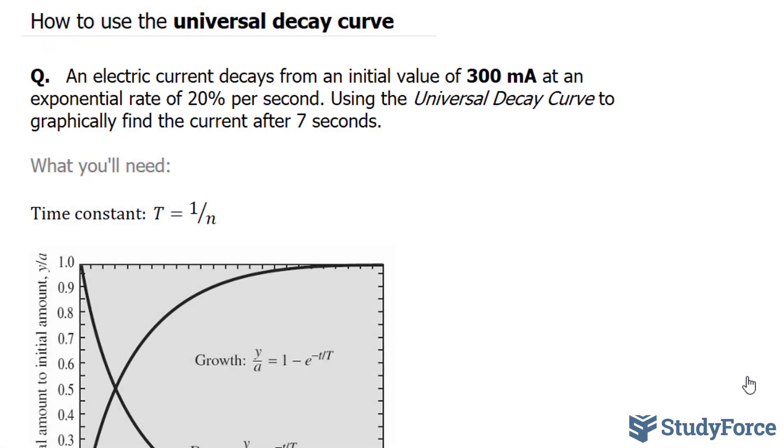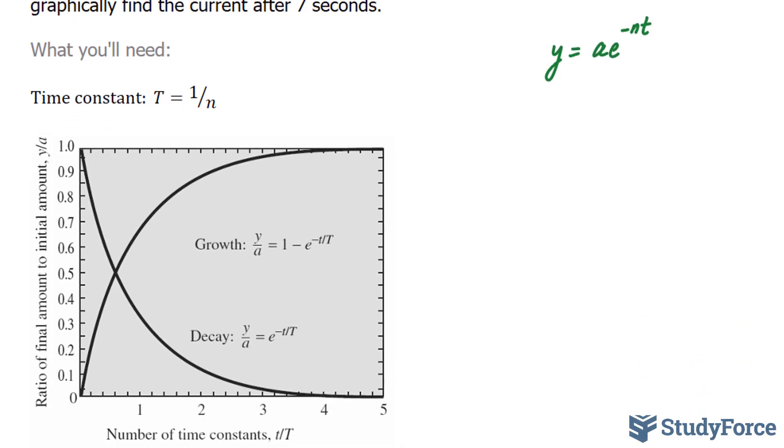Now fortunately we have the tools to measure exactly what will happen after 7 seconds. We know the formula y is equal to a times e to the power of negative nt. But in case you don't have a calculator or you don't know this formula, I'm going to show you a way on how to use this Universal Decay Curve to find out the amount after 7 seconds.